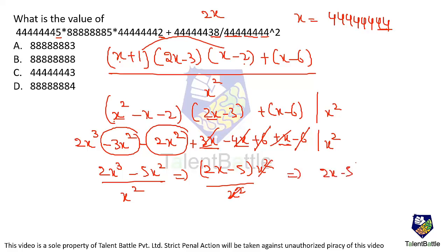So the result is 2x − 5. Since 2x means all eights (88888888), subtracting 5 gives a last digit of 3 with all remaining digits being 8. The only option matching this pattern is option A.